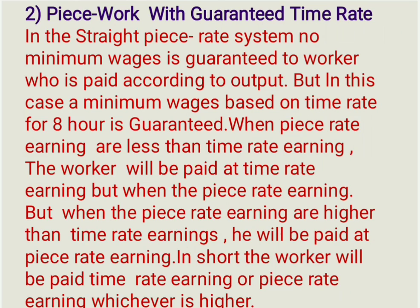In the Straight Piece Rate system, no minimum wage is guaranteed to a worker who is paid according to output. But in this case, a minimum wage based on time rate for 8 hours is guaranteed. When the Piece Rate earnings are less than time rate earnings, the worker will be paid at time rate earnings; but when the Piece Rate earnings are higher than time rate earnings, he will be paid at Piece Rate earnings. In short, the worker will be paid time rate earnings or Piece Rate earnings, whichever is higher. Therefore, labor cost per unit decreases with increase in production until Piece Rate earnings exceed the guarantee, after which the labor cost per piece remains constant.